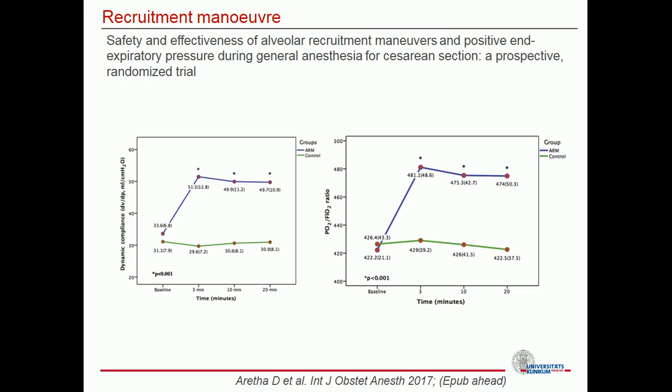This is a very interesting current study from Obstratix. They randomly selected 20 patients scheduled for cesarean section. The only difference in ventilation was a one-stage manoeuvre in the intervention group after delivery of the child. PEEP was 8 cmH2O in all patients. On the left you can see the compliance process over time with a significant difference in favor of the recruitment manoeuvre group, and on the right, better oxygenation in the recruitment group.